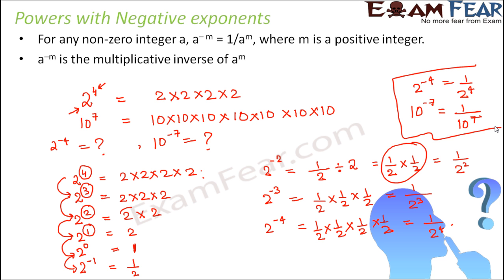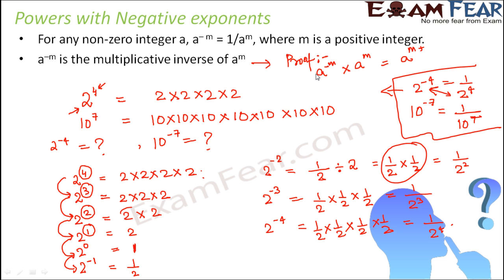Not only this — A to the power minus M is the multiplicative inverse of A to the power M. That means if you multiply 10 to the power minus 7 with 10 to the power 7, you will get 1. Looking at the relation: 2 to the power minus 4 equals 1 by 2 to the power 4, so if you multiply these two, you get 1. Let's prove this: A to the power minus M into A to the power M — by the laws of exponents, when multiplying exponential numbers with the same base A, the powers get added. So minus M plus M equals 0, giving A to the power 0, and anything to the power 0 equals 1. This proves that A to the power minus M is the multiplicative inverse of A to the power M.